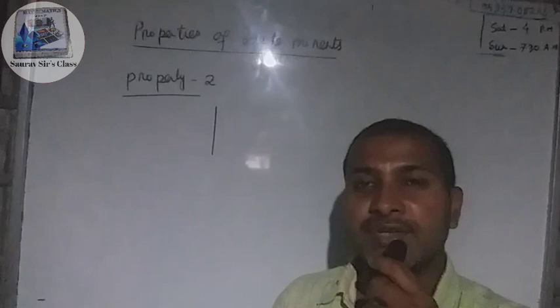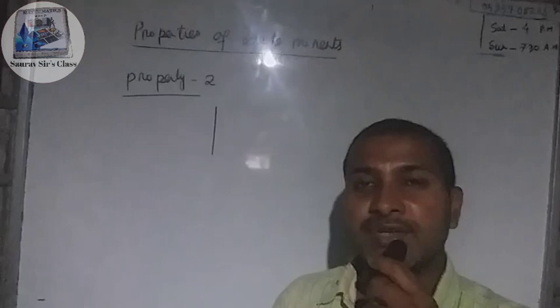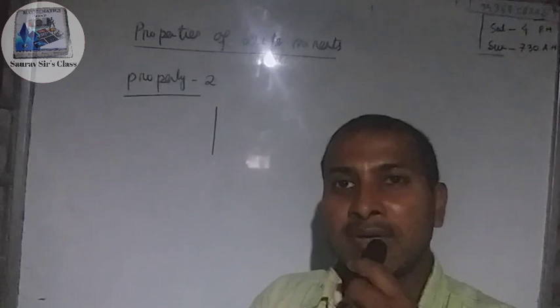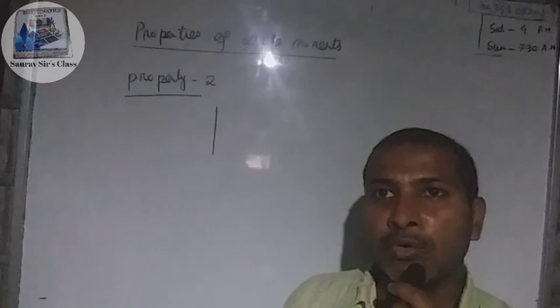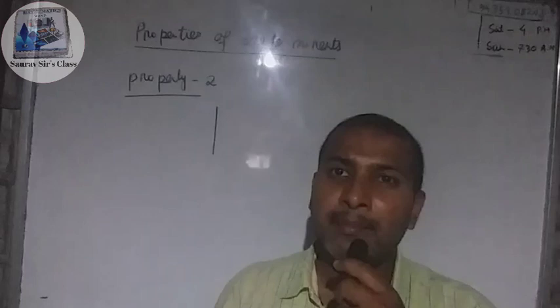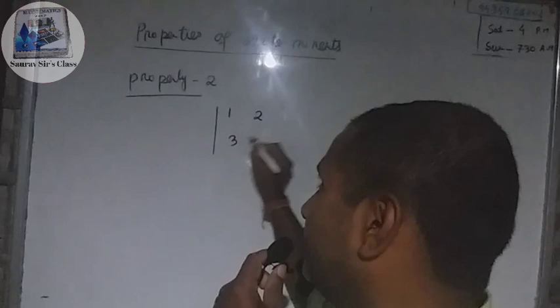The second property is: if we interchange any two rows, then the sign of the determinant changes. For example, take the determinant [1, 2; 3, 4] and interchange the first row and the second row.